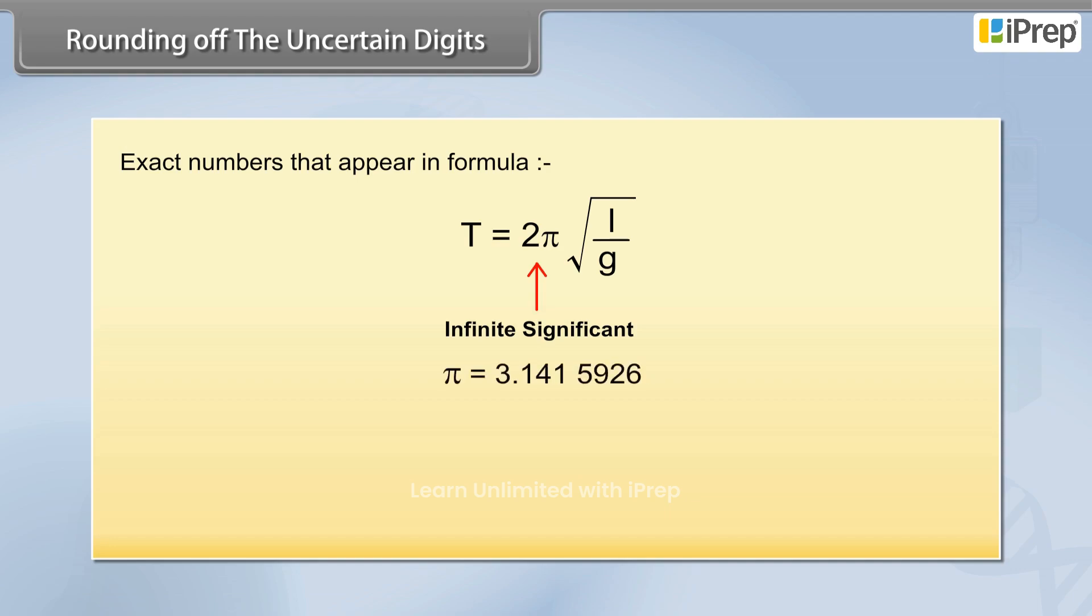Value of π is 3.1415926 which has a large number of significant figures. We assume the value to be 3.142 or 3.14 which has limited significant figures for convenience.